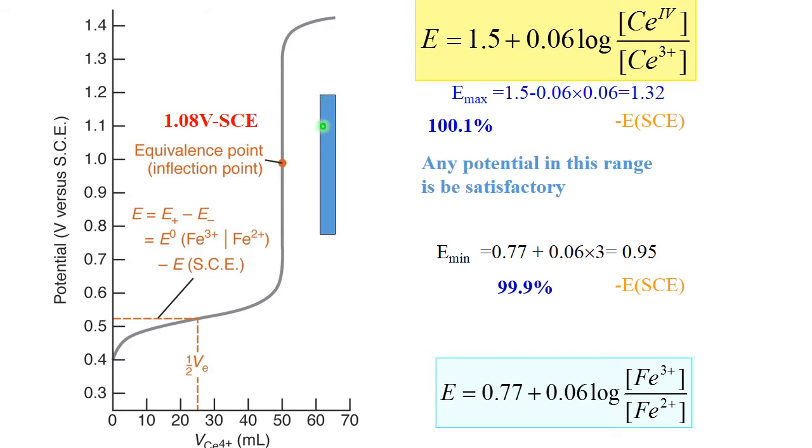Anyway, any potential in this range is satisfactory. We can stop at any point. It's very easy, very sharp titration, and widely used in analytical chemistry.